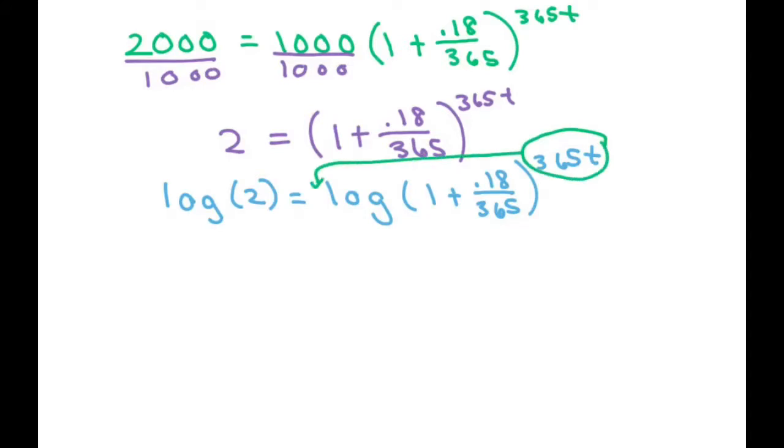So we'll rewrite that as log 2, then we have equals 365t times log of 1 plus 0.18 over 365.